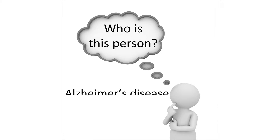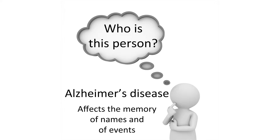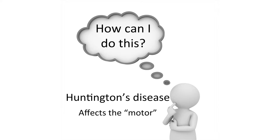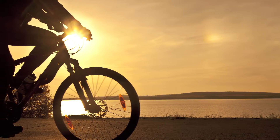Memory. Other neurodegenerative diseases such as Alzheimer's and Parkinson's affect the memory of names and events. Huntington's disease is different because it affects motor memory. Therefore, individuals affected with Huntington's remember names and events, but they gradually lose memory of movements that, for instance, enable driving a car, riding a bicycle, playing an instrument, or eating.